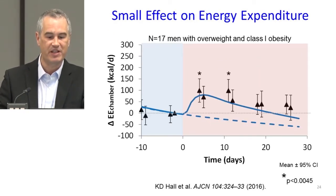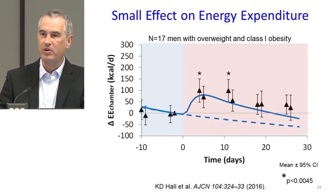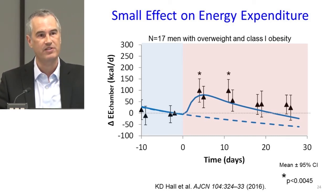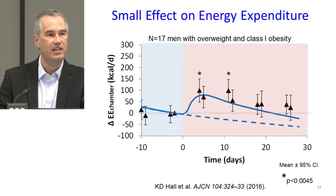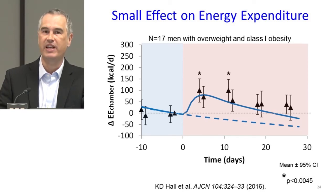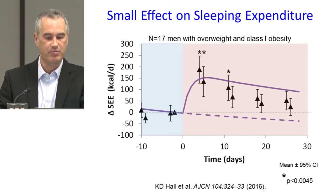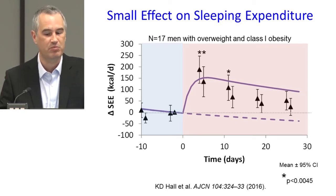What happened to energy expenditure? There was a small increase early on in 24-hour energy expenditure as measured by the chamber — roughly what you would expect based on model predictions. We were in a slight negative energy balance, which is why these curves are going down slightly over time and seem to be petering out. Sleeping energy expenditure shows a similar pattern, and the mathematical model predictions are roughly in line with that, although it seems to be depressed a little more than the model would predict.